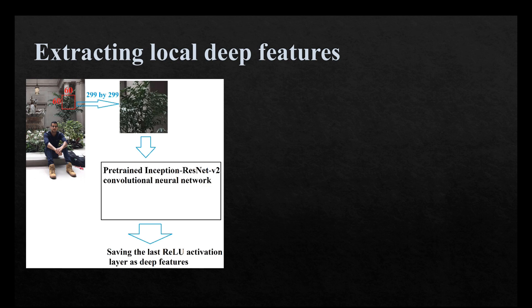The pre-trained neural network used in this work is Inception ResNet V2, which is a convolutional neural network trained on more than a million images from the ImageNet dataset. The network is 164 layers deep and can classify images into 1000 object categories such as keyboard, mouse, pencil, and many animals. As a result, the network has learned rich feature representations for a wide range of images. The network has an image input size of 299 by 299, so the image whose features are going to be extracted should have the same size.